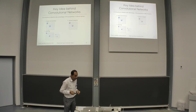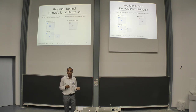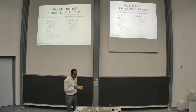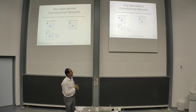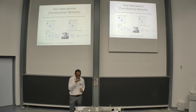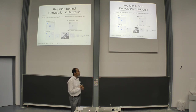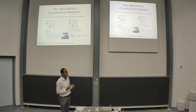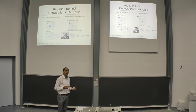The third key idea is pooling. The idea is to merge semantically similar features into one. By doing this, you not only reduce the number of parameters to tune during training, but also make the network invariant to shifts and distortions. The fourth property is the use of many layers — by using many convolutions and pooling operations, you can find really nice representations of the data.